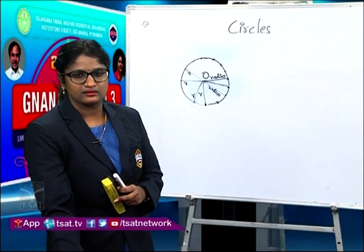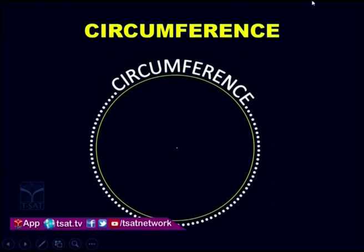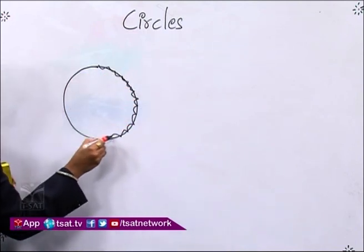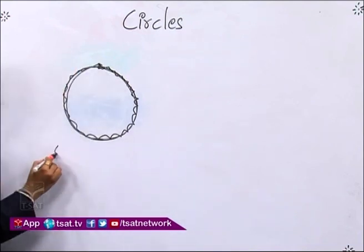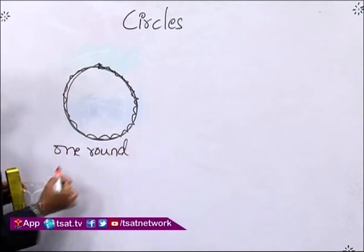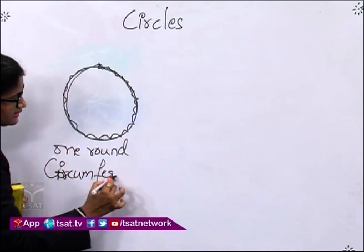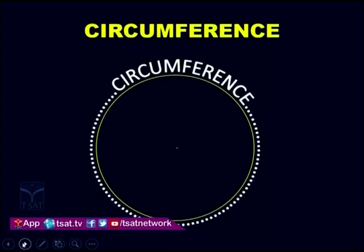Now we will see about the circumference of a circle. Here is a circle, and if I ask you to run around the boundary of this circle, you will run all this way. You will start at this point, run all the way, and end here — that is, you have completed one round. That is, you have run the circumference of the circle. The distance you ran is called the circumference of the circle. You start from a point and end at the same point.